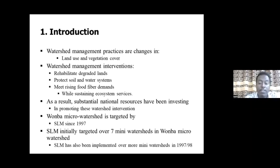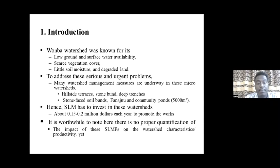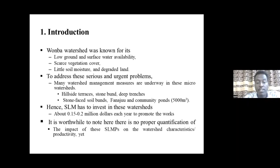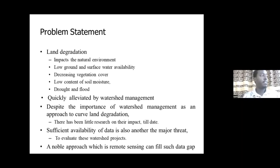The study area is the Womba watershed, where seven micro-watersheds are targeted by sustainable land management intervention. This watershed is very degraded, with low land cover, scarce vegetation cover, low groundwater and surface water availability, little soil moisture. To address these problems, many watershed management interventions are underway, including hillside terraces, stone bunds, and deep trenches. This is funded by Sustainable Land Management, which is investing up to 0.2 million dollars on this project. However, there is no proper quantification of the impact of these SLM activities.